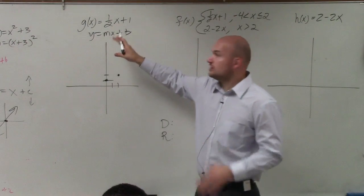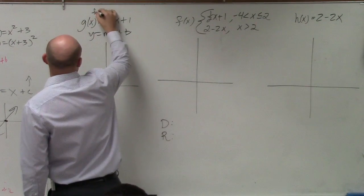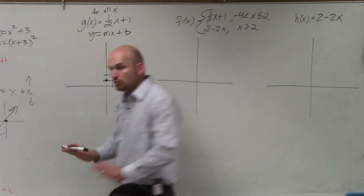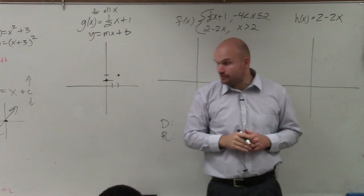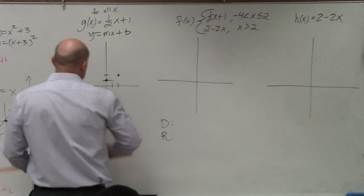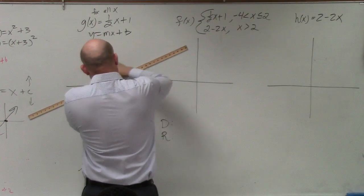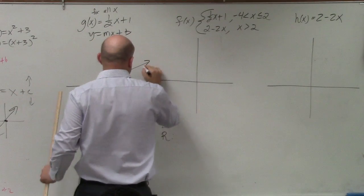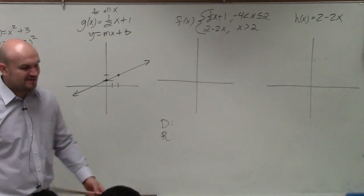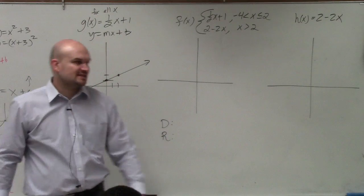Now, I am graphing this function for all x. There is no restrictions on this graph. Would everybody agree with me? So I can just kind of do what I saw some of you doing. Take a nice little ruler and say that graph extends indefinitely to the left and indefinitely to the right.